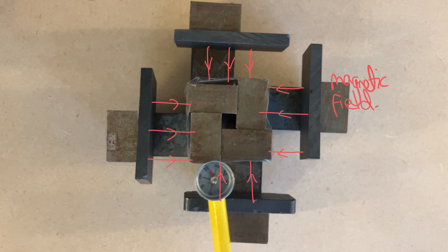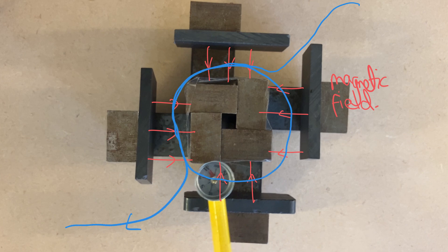And let's also draw in the current coming in and doing one loop round and out. And let's assume for now that the current is flowing in this direction.